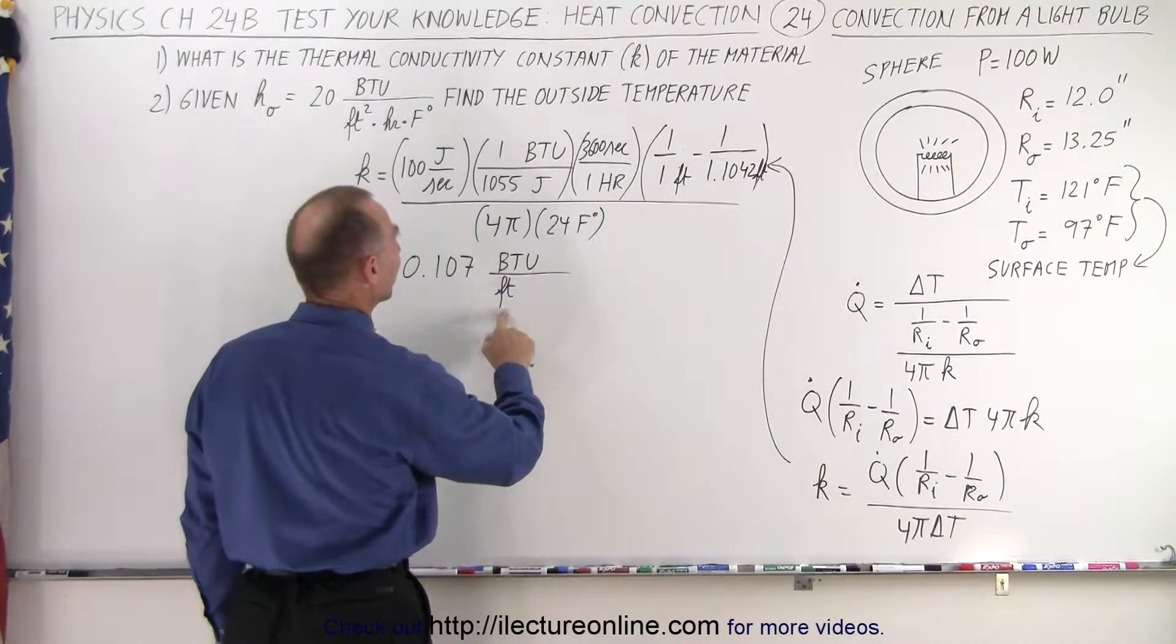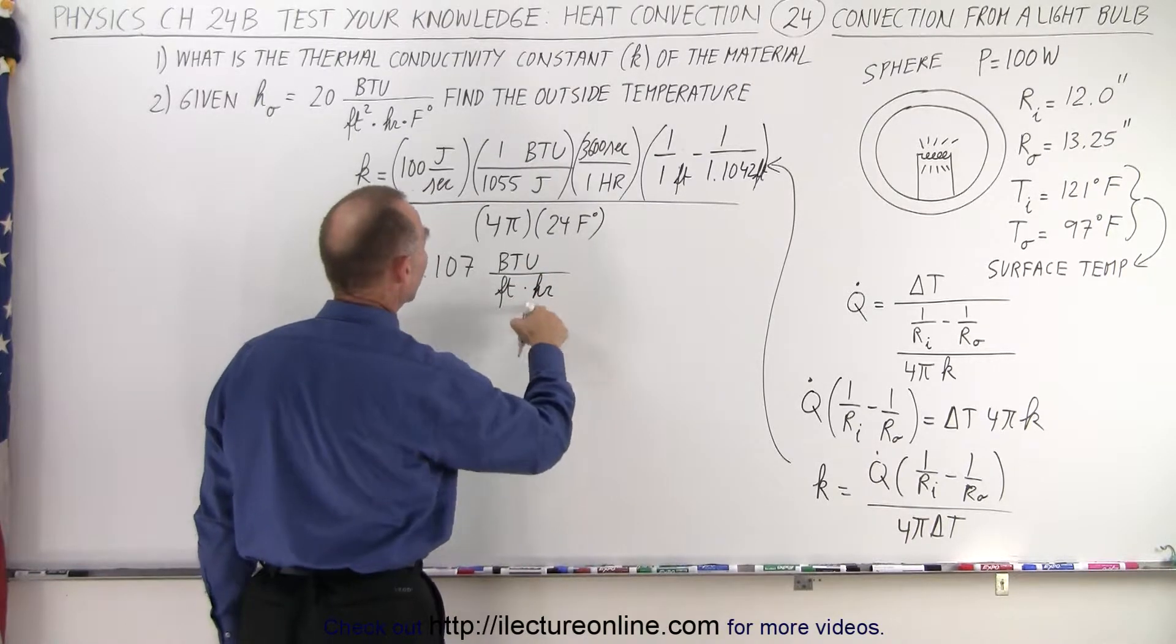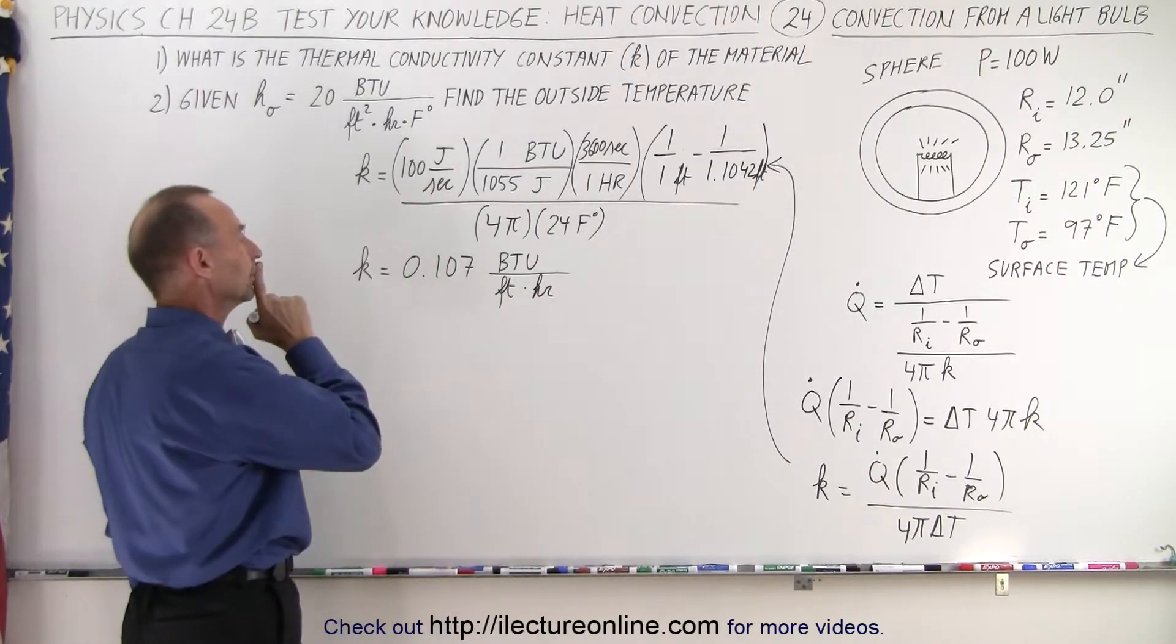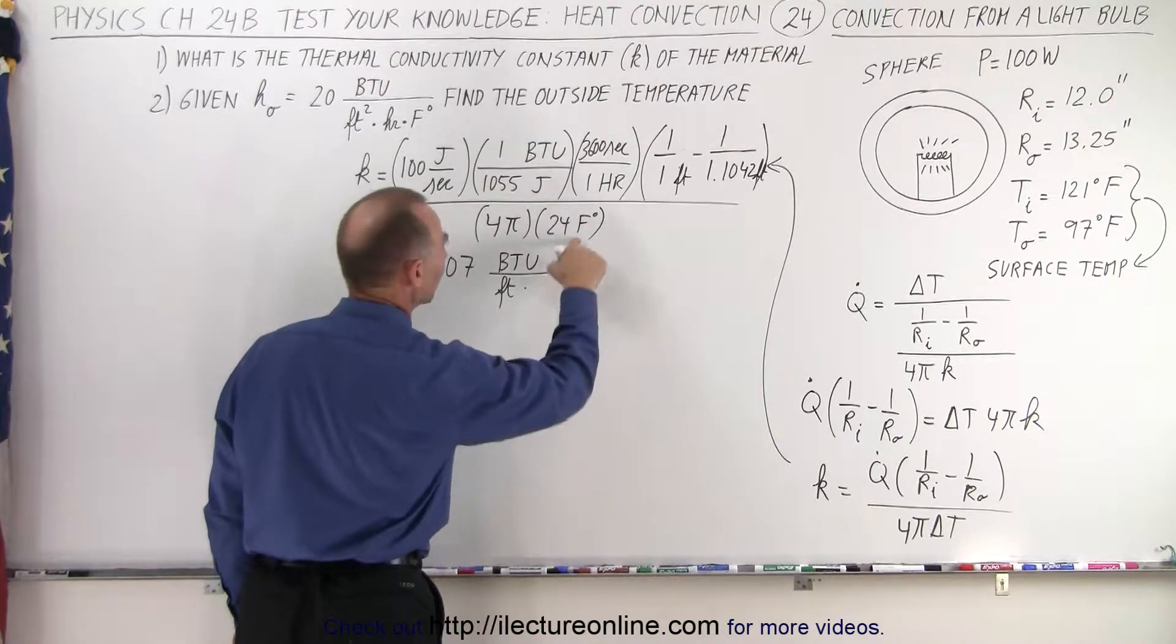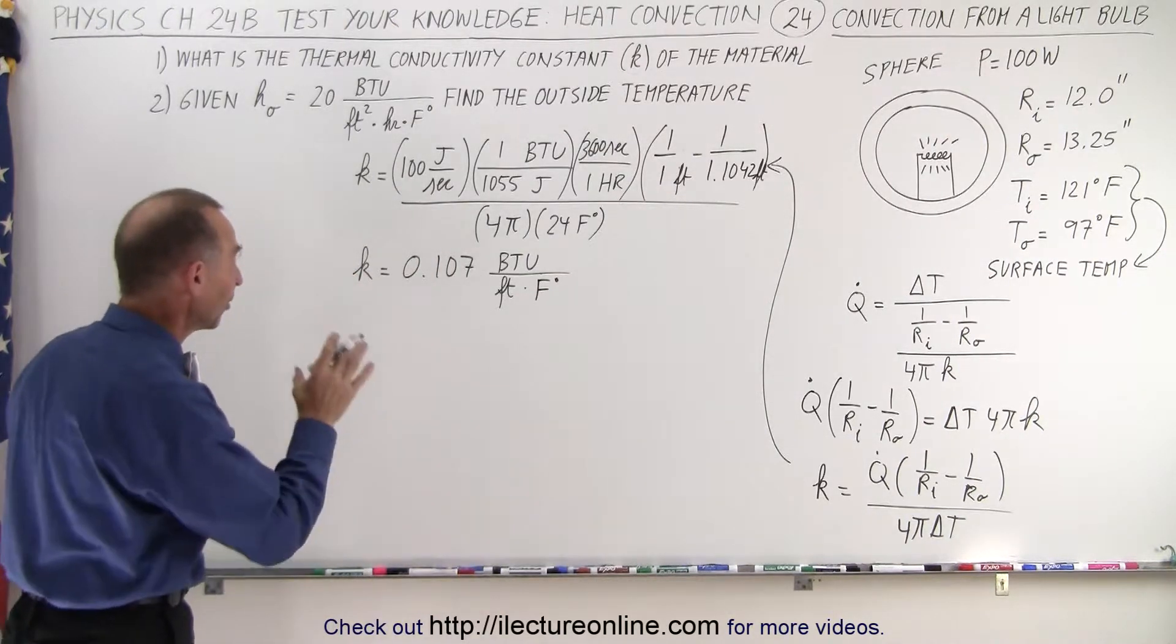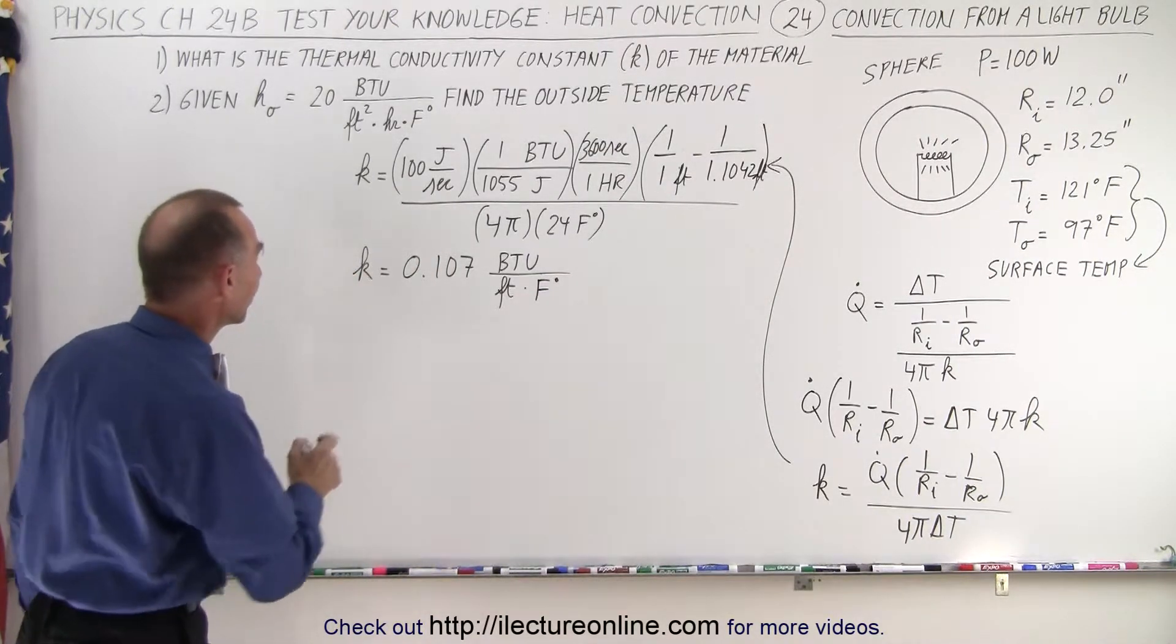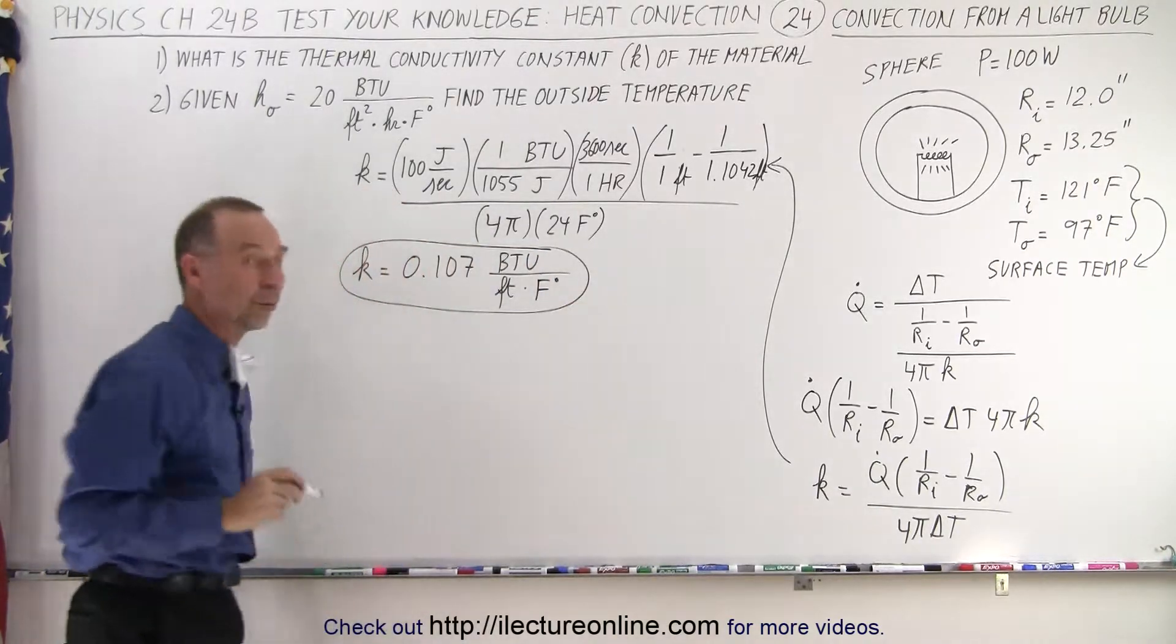So we need, that's per feet, and that would be times hours, right? So BTUs per feet per hour. No, no, not per hour. That would be per Fahrenheit degree. There we go, per Fahrenheit degree, not per hour. Now I'm good. BTUs per feet per Fahrenheit degree, and so that would be the conductivity constant of the material around the light bulb.